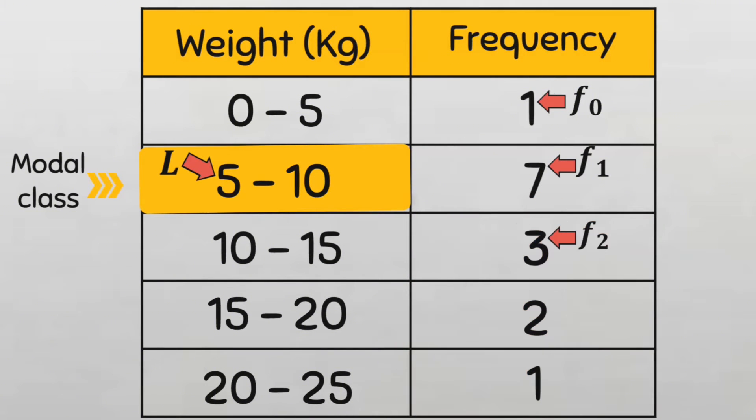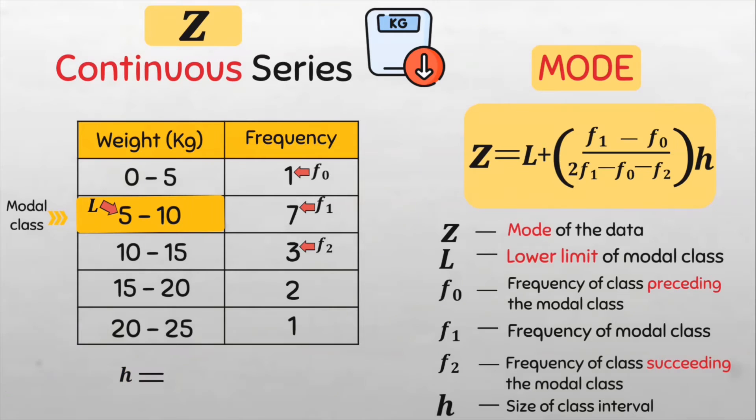And the size of the class interval h is—if we're using the modal class, the lower limit of the next class minus the lower limit of this class will give us the size of the class interval. That will be 10 minus 5 equals 5.